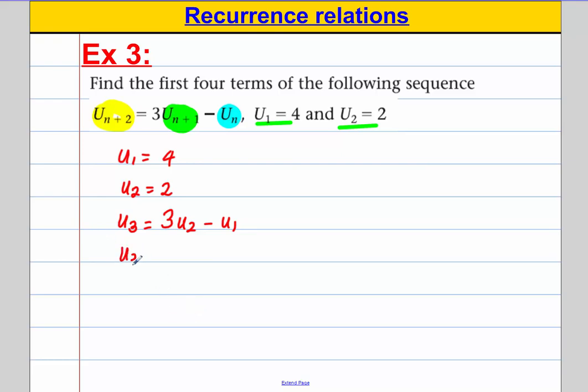So u3 is equal to 3 times u2, which is 2, take away 4. u3 must be 6 take away 4, which is 2.